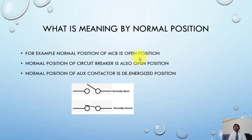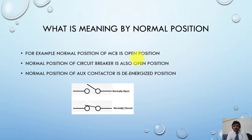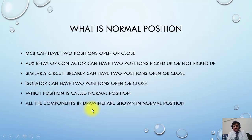If you have any auxiliary contact, this contact will be shown in de-energized or deactivated mode. So you have to take special care. If you know this logic, you can easily understand the concept. An MCB can have two positions: open or closed.